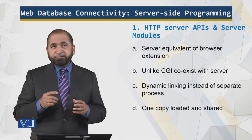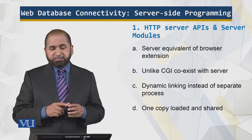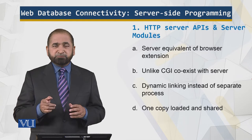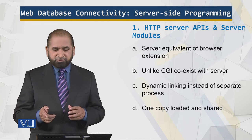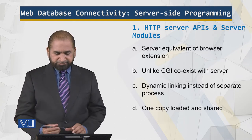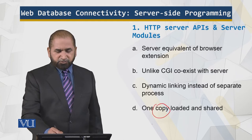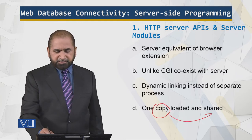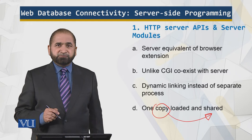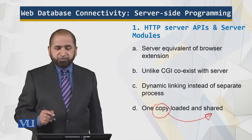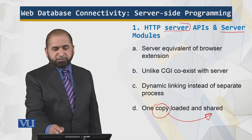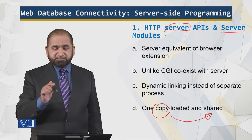And because of using the same address space, it results in space optimization. It's dynamic linking instead of separate processes. Why? Because these belong to the server and one copy is loaded and shared. This means it saves space as well — that is the benefit of HTTP server APIs.